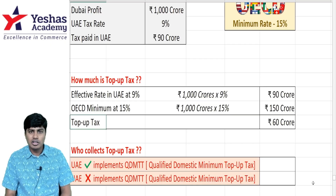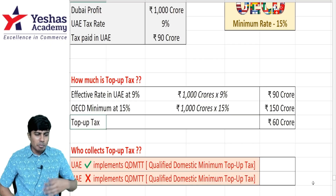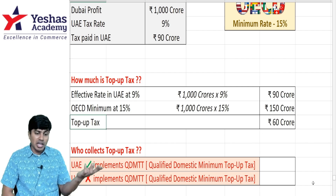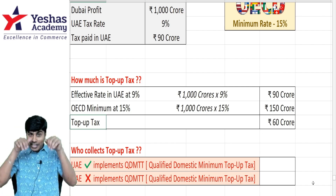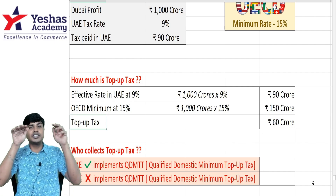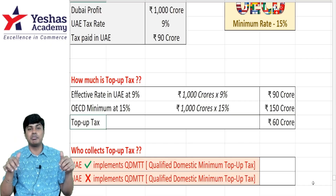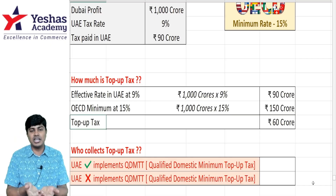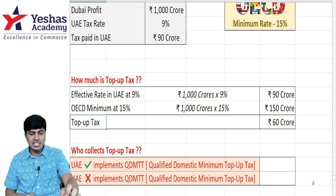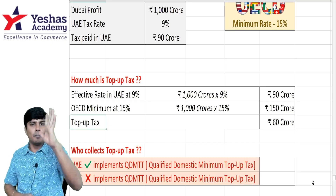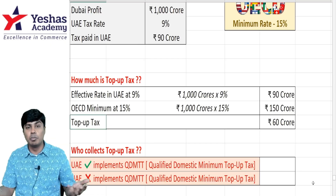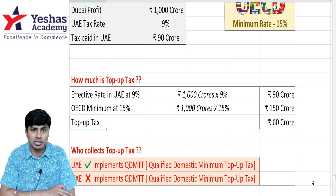UAE should have charged 15%, but charged only 9%, inviting people to do business there and save tax. OECD says the balance 60 crores must be paid. The next question is: who should pay, and to whom? I hope you understood till here.